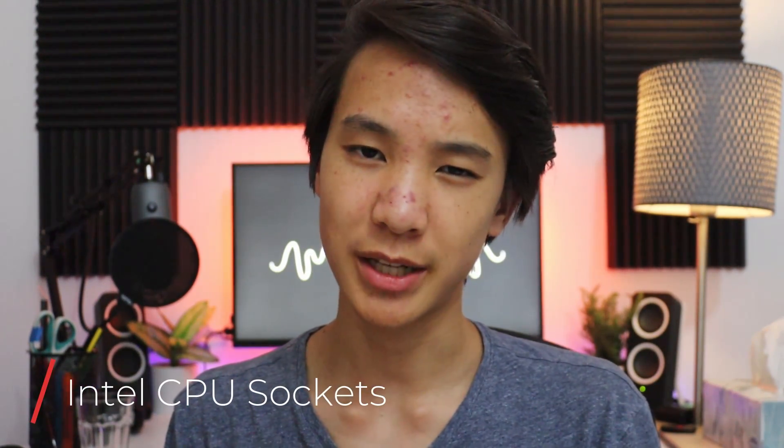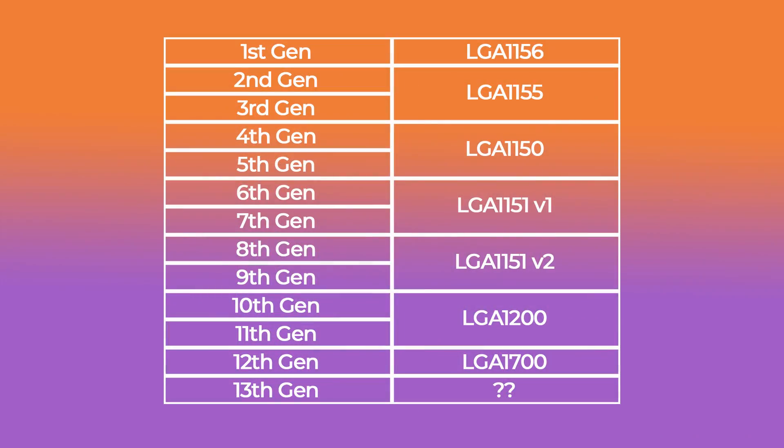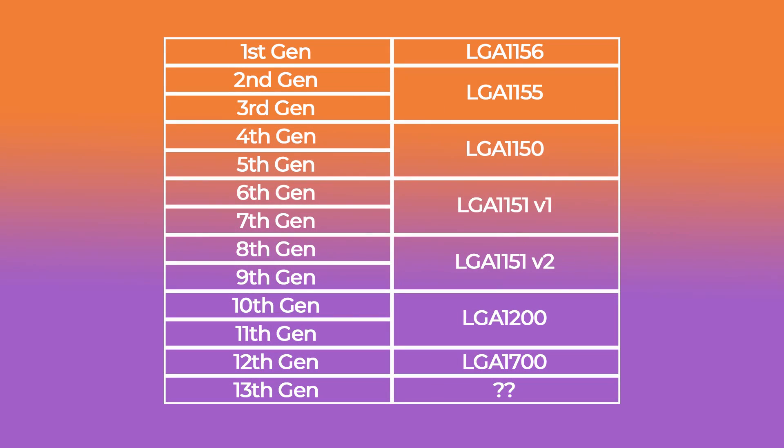Intel also changes sockets quite frequently. Intel uses a socket known as LGA, or Land Grid Array, where contact pins on the motherboard line up with contact pads on the CPU. Sockets are named LGA plus the number of pins. First gen uses LGA1156; second and third gen use LGA1155; fourth and fifth gen use LGA1150; sixth and seventh gen use LGA1151v1; eighth and ninth gen use LGA1151v2; tenth and eleventh gen use LGA1200; and twelfth gen is speculated to use LGA1700. Unfortunately we have no information on thirteenth generation Intel's socket.